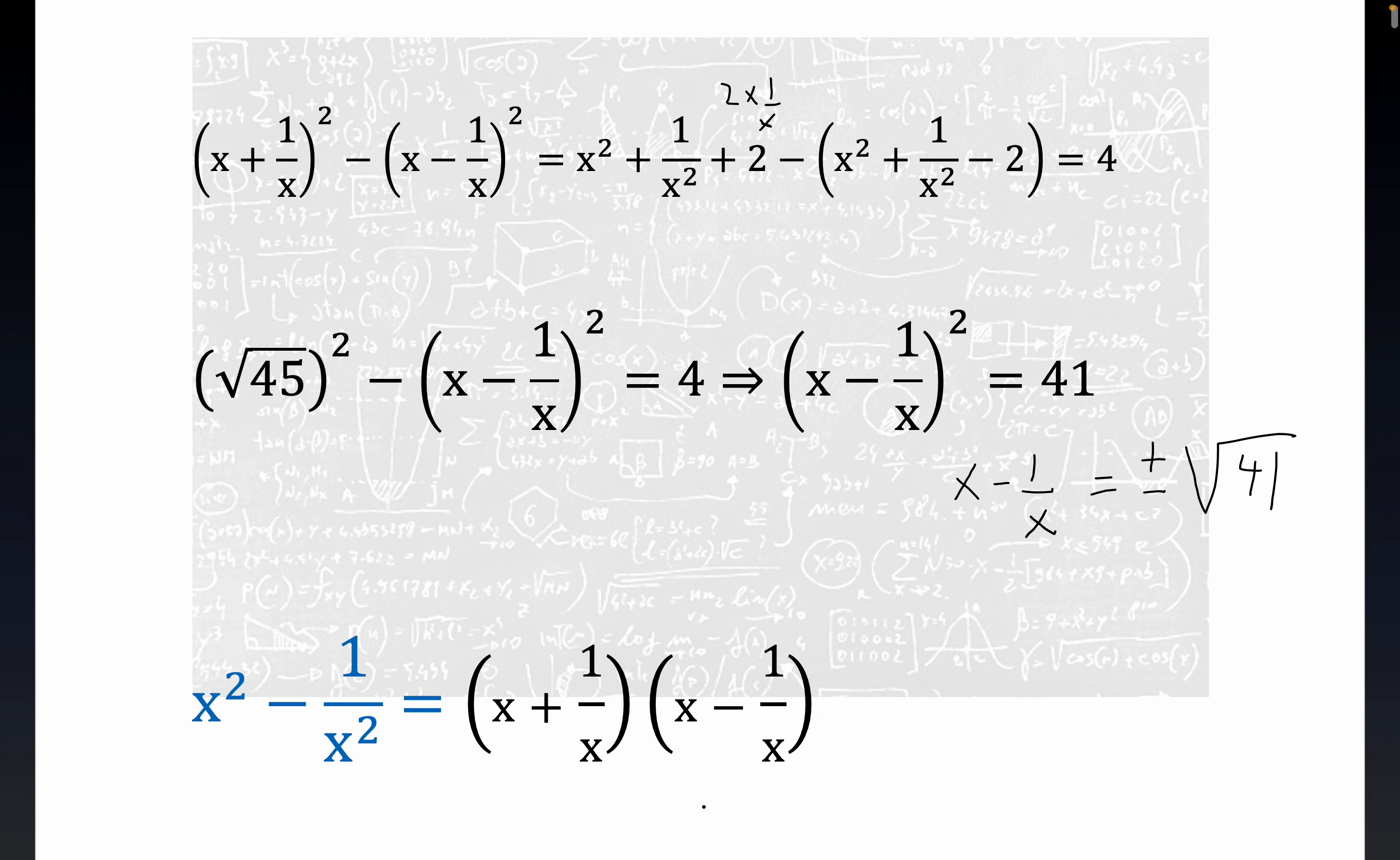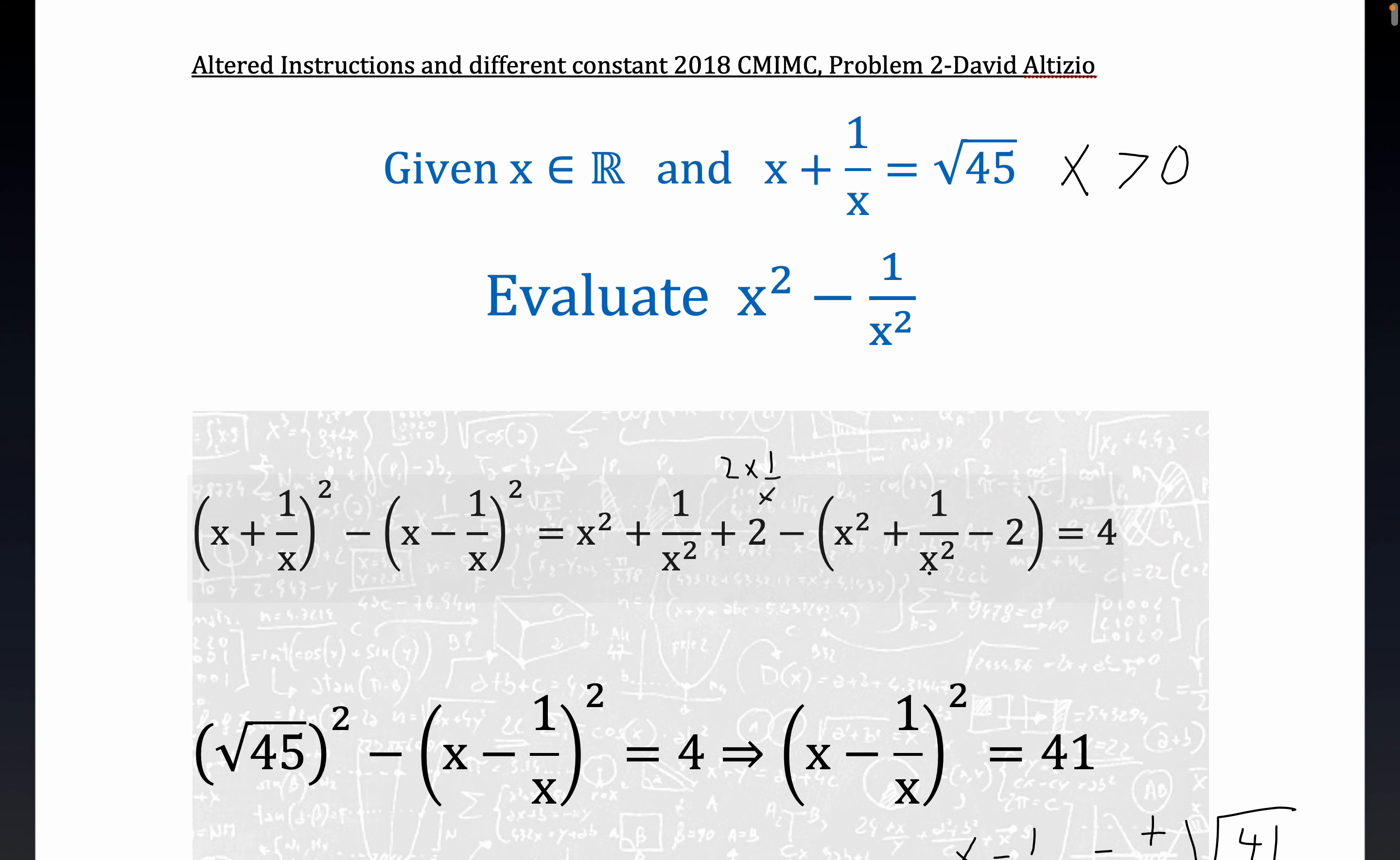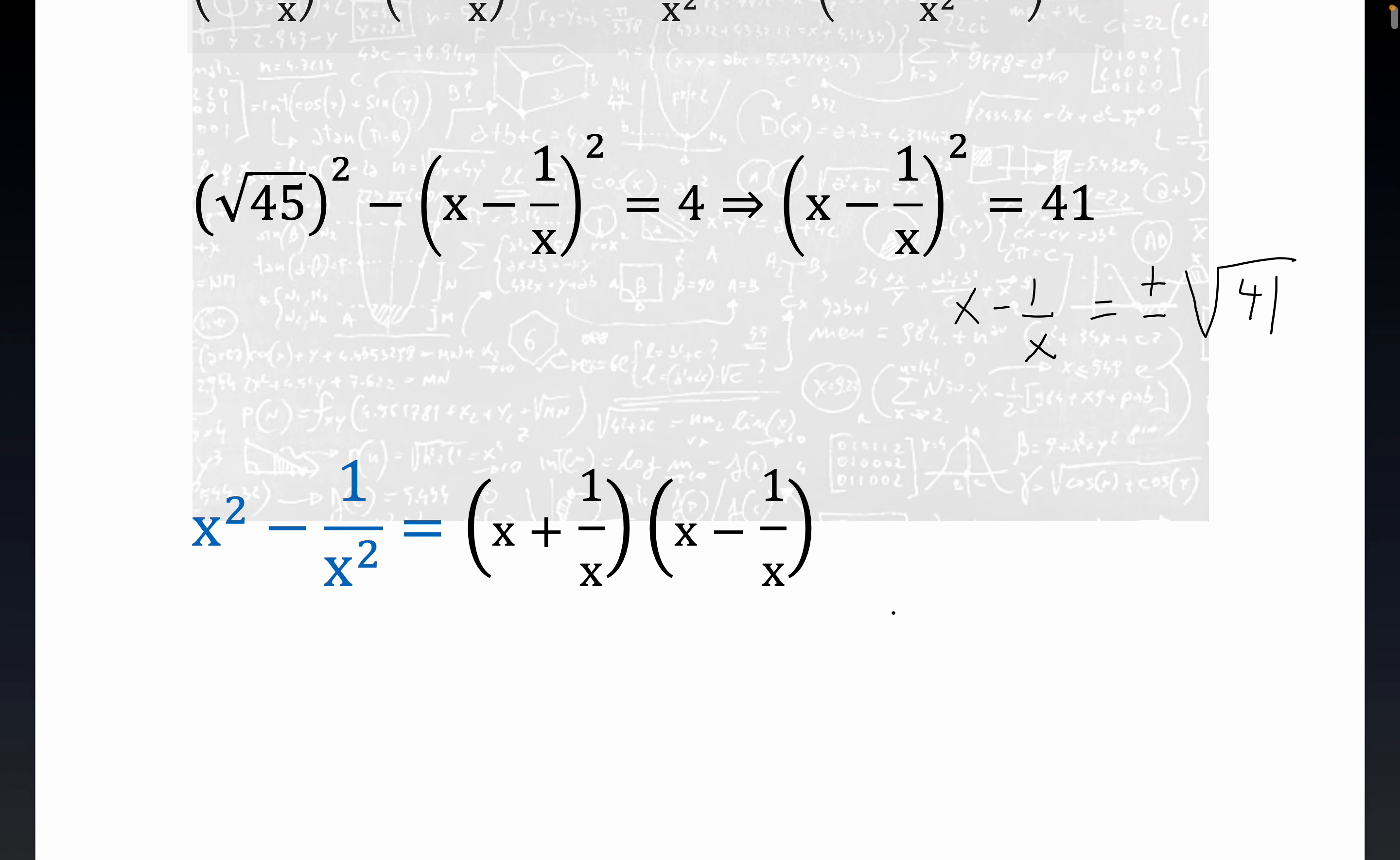Here's our original problem. So we know what x plus 1 over x is. It's given as to be the square root of 45. And so what we get right here is that this is equal to the square root of 45 times, and let me put this in parentheses, plus or minus. And that seems a little weird, but there's two solutions to this right here, folks, at the very beginning.